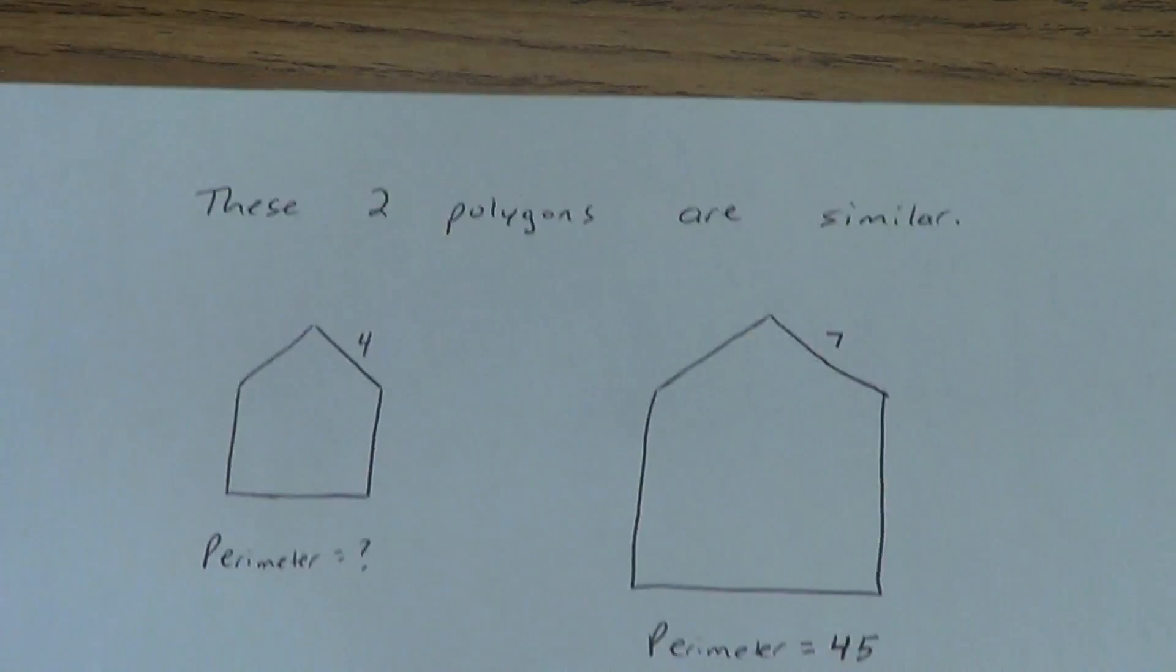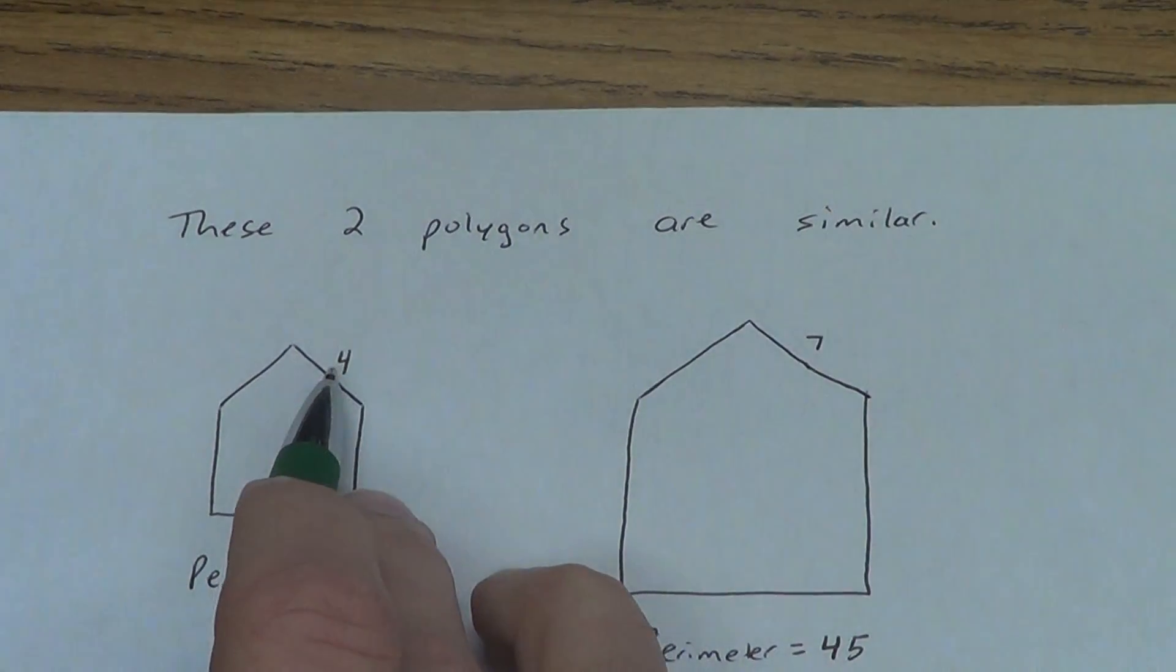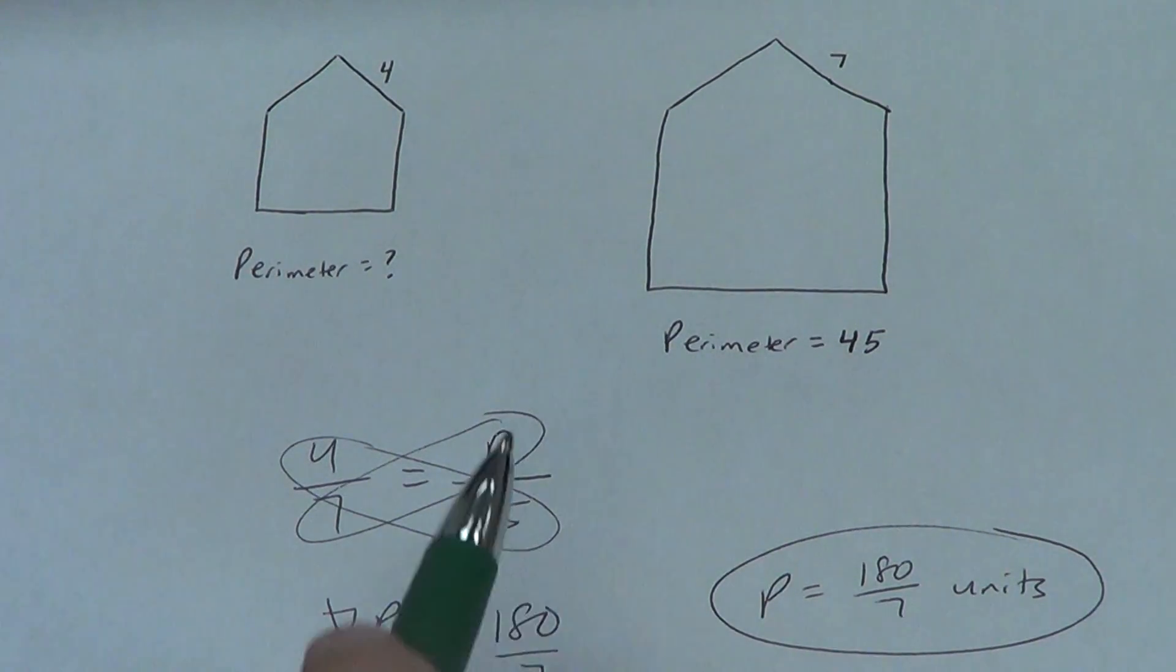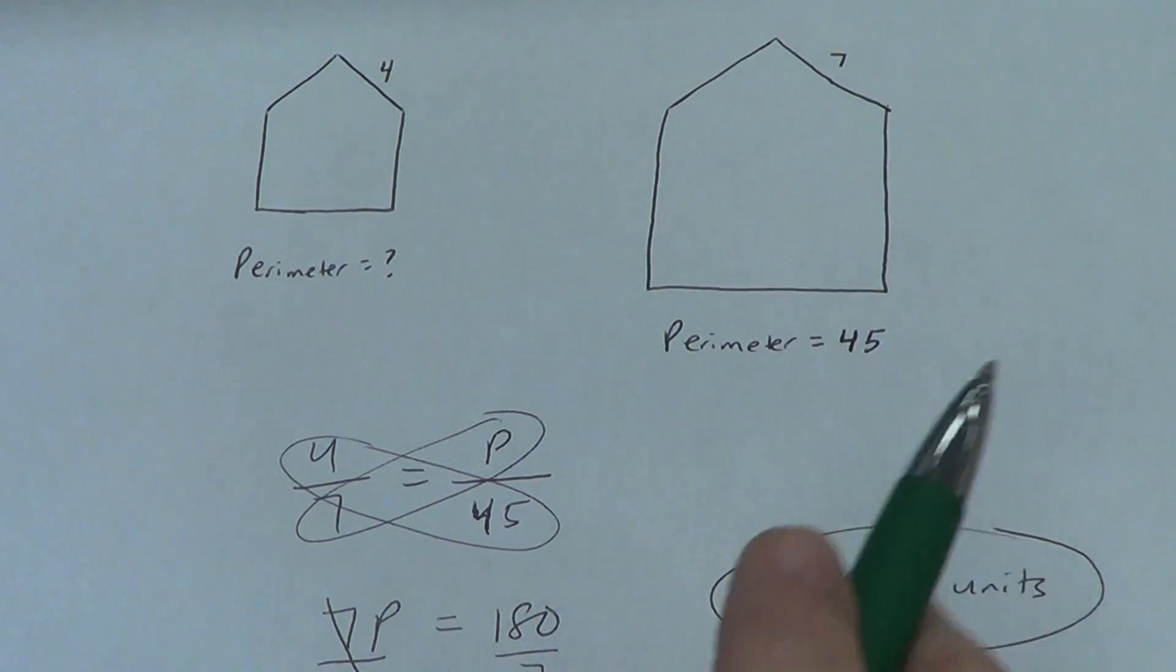Check to see if it makes sense. This is smaller. Is 180 over 7 smaller than 45? Well, we could type it into a calculator quick to check that. Or we could do a little quick math. 7 goes into 180 25 times with 5 left over. So, it's about 25, 26, which is definitely smaller than 45. It does make sense. Last one.